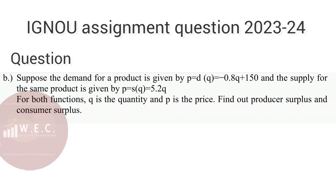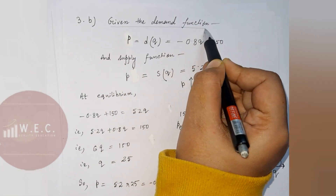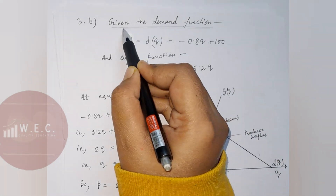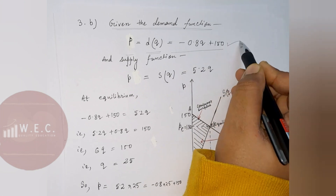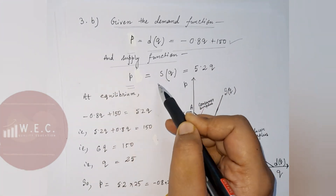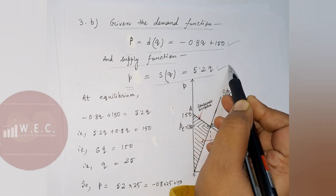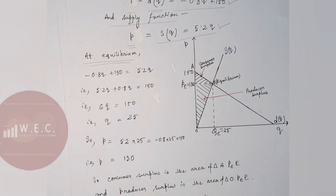Please see the question properly. Today I am going to solve this question — please see the solution thoroughly. The demand function is given as p equals minus 0.8q plus 150, and the supply function is p equals 5.2q. At equilibrium, demand equals supply.